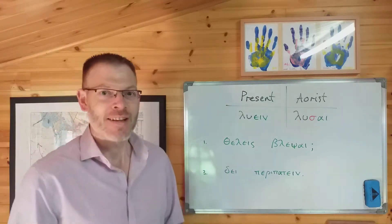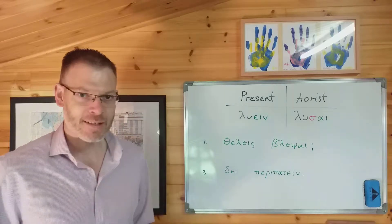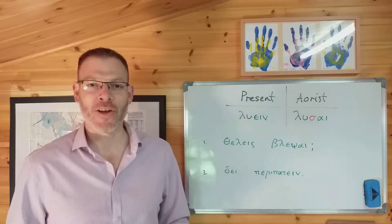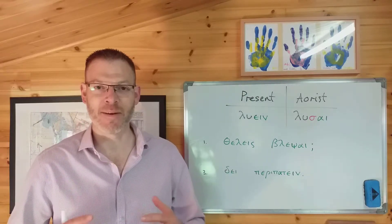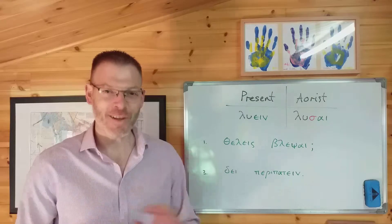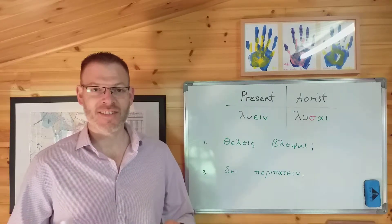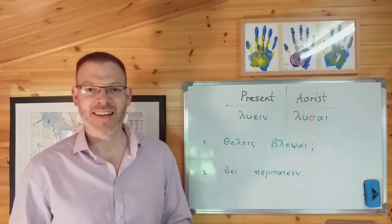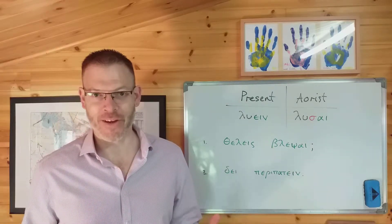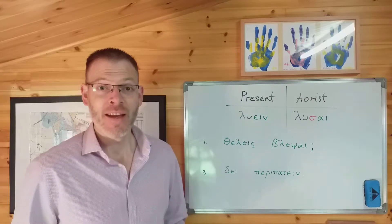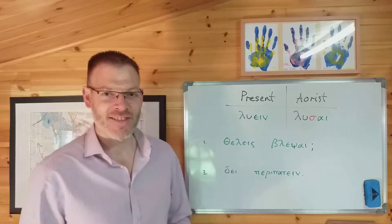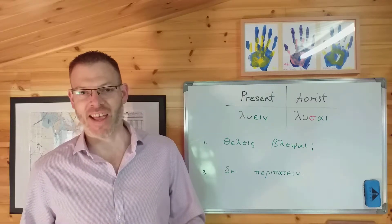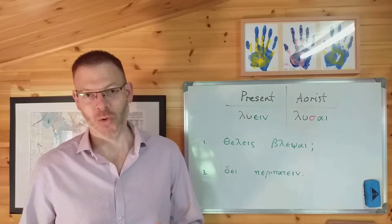The infinitive is a mood of the verb which just contains the bare idea of the verb, nothing else at all. It doesn't say when it happened, it doesn't say who did it — all it contains is the idea of the verbal action itself. We normally translate it in English as 'to do something': to drink, to say, to see, to watch, and so on.